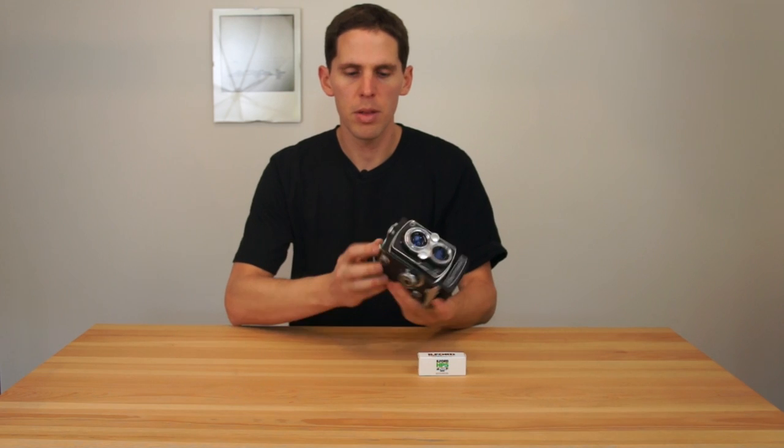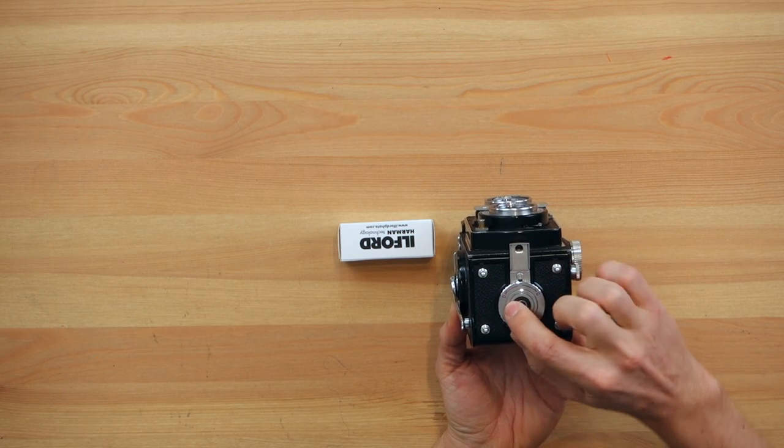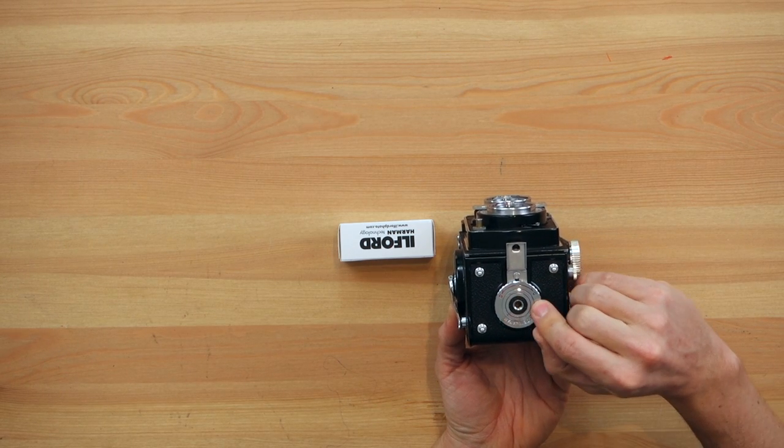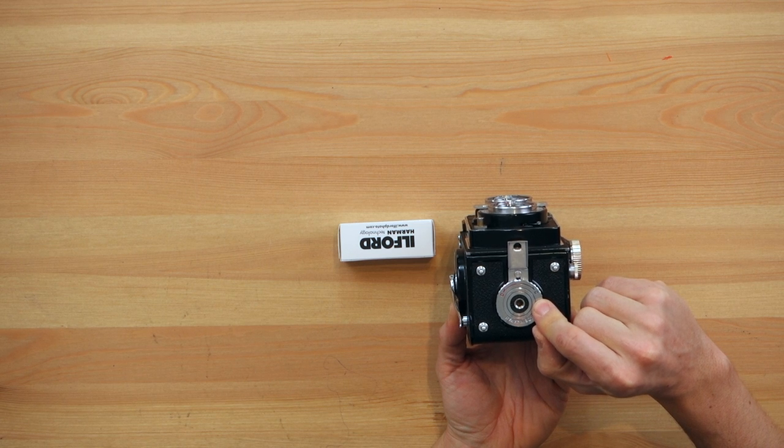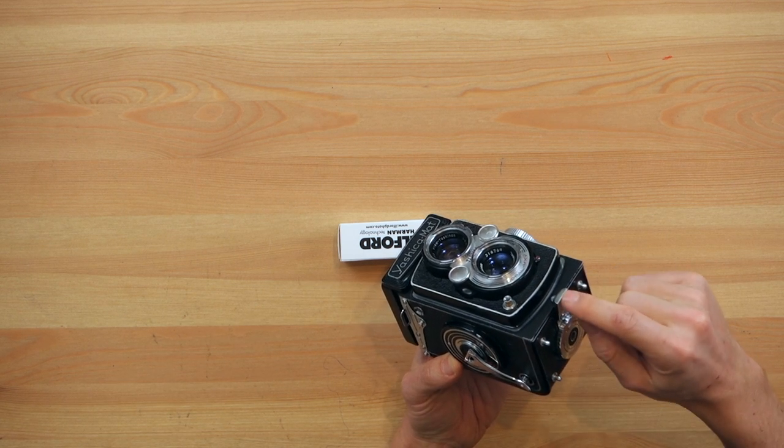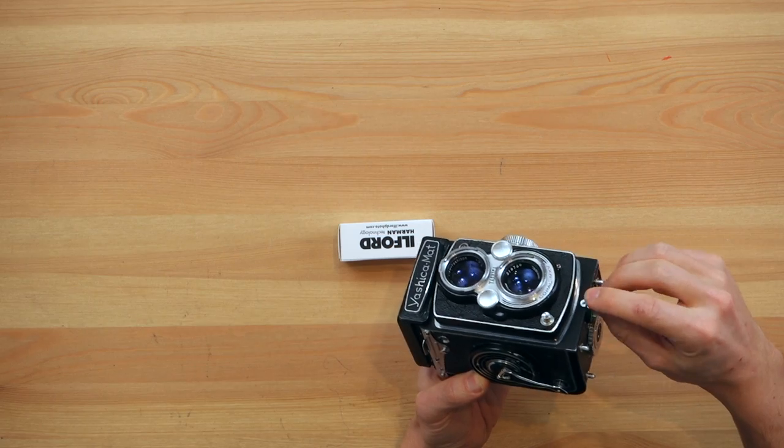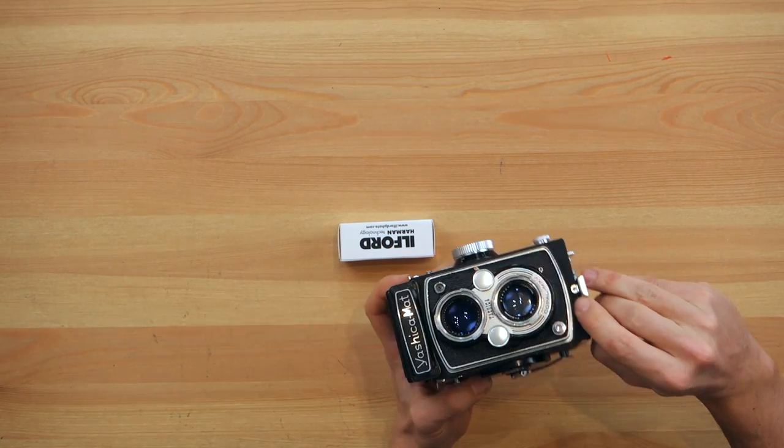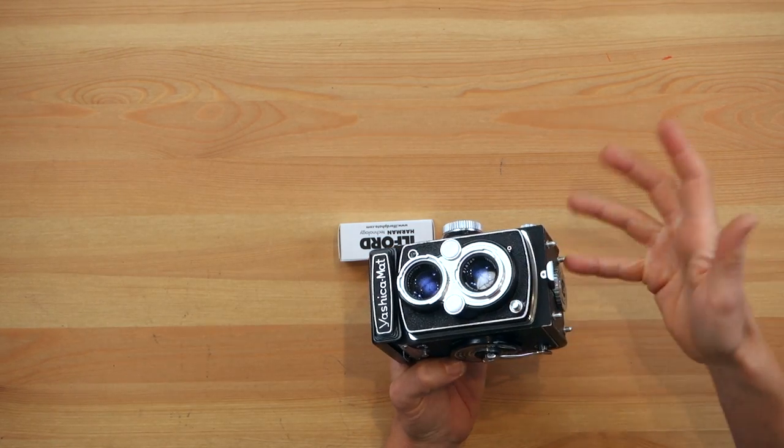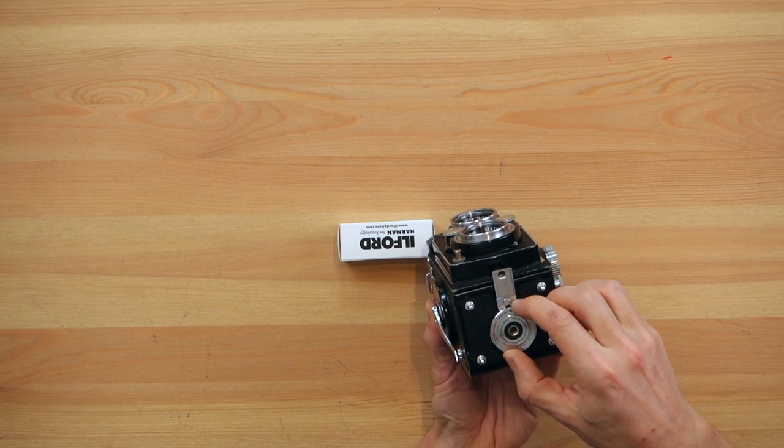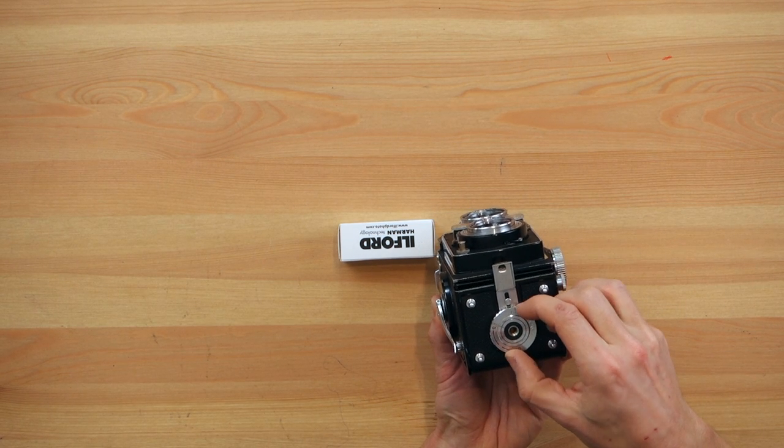First thing when you have a TLR, most of them have a little plate in the bottom which you turn towards the O to open or towards the C to close. This will release this little lever that hooks onto a little knob there and prevents it from opening. So we just turn it towards the O and as you can see it moves and opens the camera.